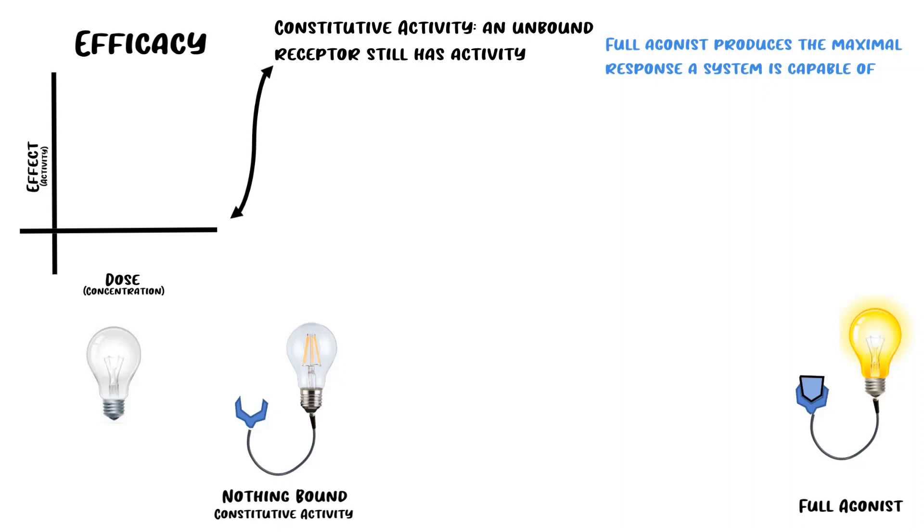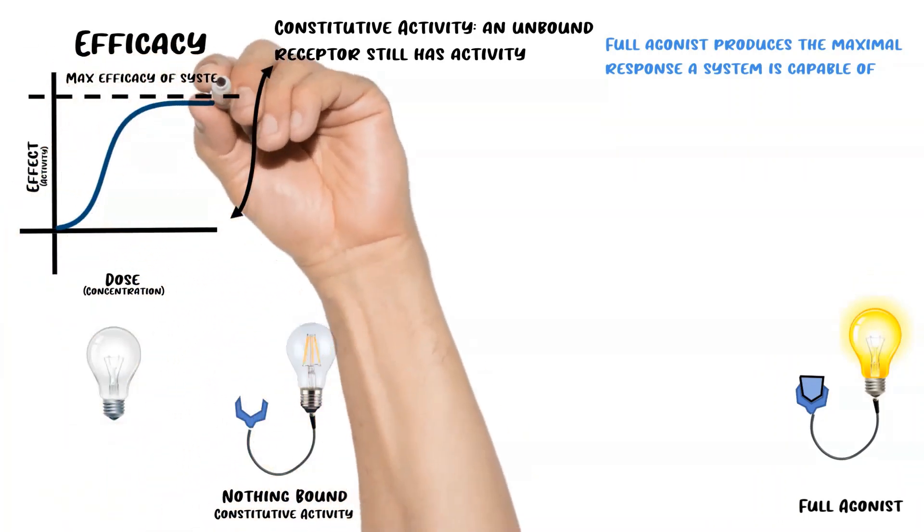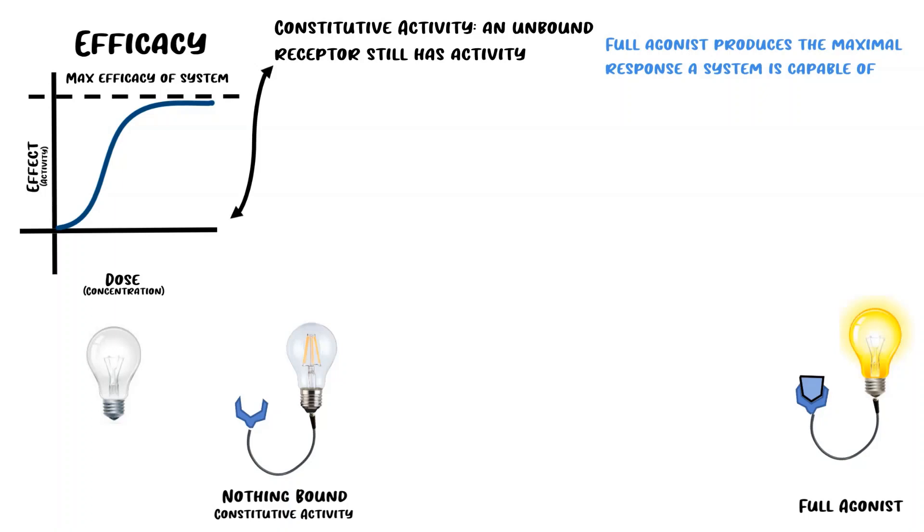One thing that's not that intuitive but important to note is that a full agonist has full efficacy, so it's able to produce the maximum effect capable of the system. But this says nothing about its potency. A drug can have very low potency, requiring a very high dose, but still be a full agonist because it produces the full effect. It can also have low affinity—affinity is how tightly it binds the receptor—so it can bind very loosely but still generate the full effect.